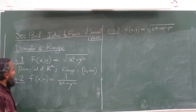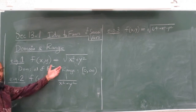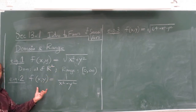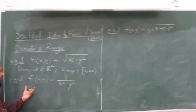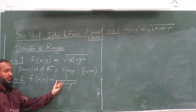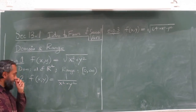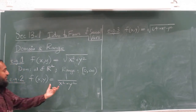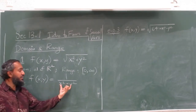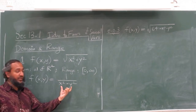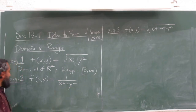That was an easier example. Let's do a more sophisticated example: f of xy equals one over x squared minus y squared. Now the denominator cannot be zero.